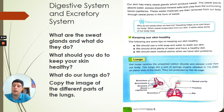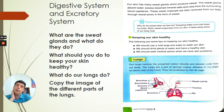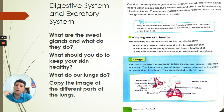Now we're going to move on to our lungs. Our lungs remove unwanted carbon dioxide and excess water from our body. The lungs are a pair of spongy organs situated in the chest on either side of the heart, and they are protected by the ribcage. The lungs take in oxygen and excrete — get rid of — carbon dioxide. When we breathe in, oxygen goes all through our body, and when we are finished with it we exhale.